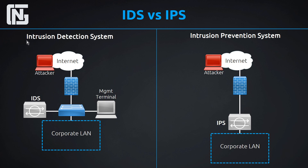Focusing on the left diagram — the intrusion detection system. Intrusion detection systems were available before intrusion prevention systems. The basics of an IDS is that if there is an attack on the network, the IDS sits there analyzing traffic that passes through. If it sees something abnormal, it sends an alert via email or text to the security team. So an attack comes in, the IDS detects it, and sends an alert.